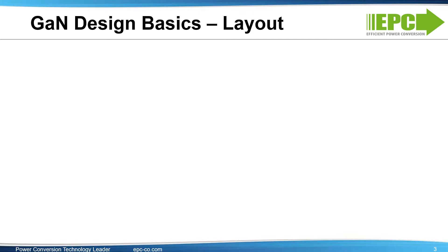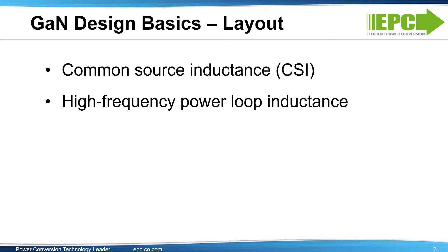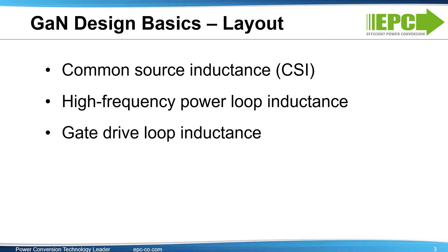The fast switching speeds of GAN devices magnify the impact of parasitic inductances on performance. That's why we're going to focus on layout techniques and ways to minimize these parasitics. It's not possible to reduce all components of parasitic inductance equally, and therefore we'll address them in order of importance starting with common source inductance, then high frequency power loop inductance, and lastly gate drive loop inductance. Finally, we'll show an example of an optimal layout that realizes the maximum performance of eGaN FETs.